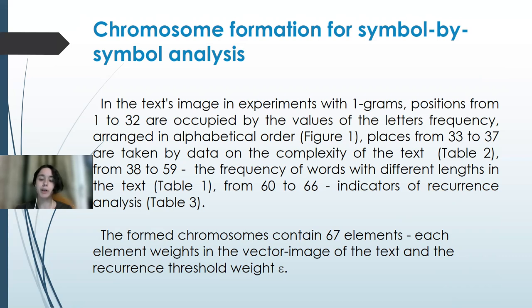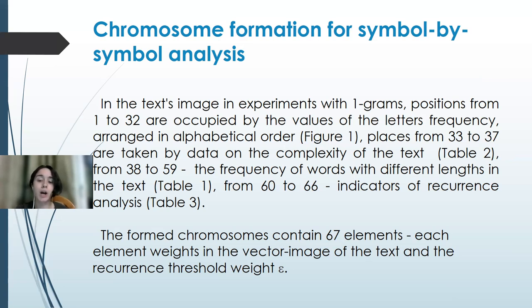For the experiment with 4-grams, the chromosome structure is the same, but the 100 most common 4-gram combinations were selected for analysis. The number of genes in the chromosome was increased to 135. The first 100 positions are taken by weights of the most common 4-grams, and all other positions hold the same indicators in the same order as in the 1-gram chromosome.